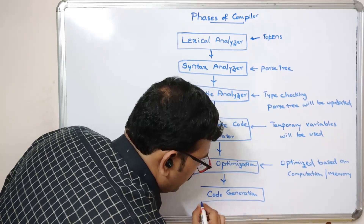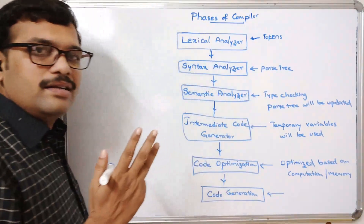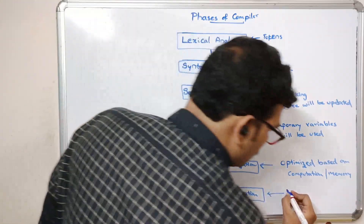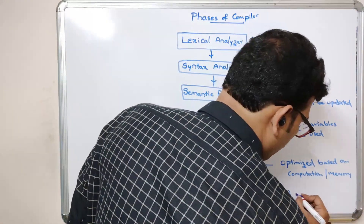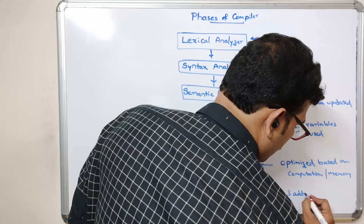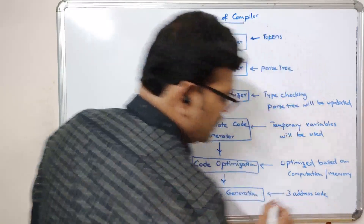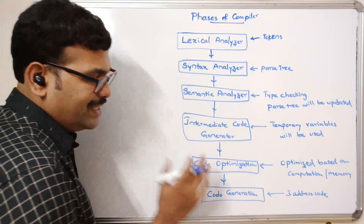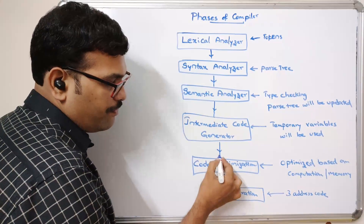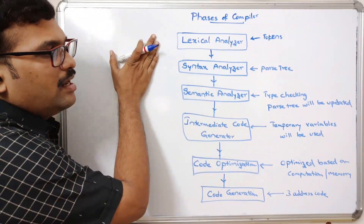From this optimized code, we will go to code generation. Here, by using the three address code, the instructions will be given. So this completes the phases.